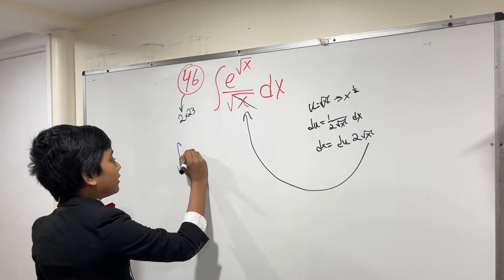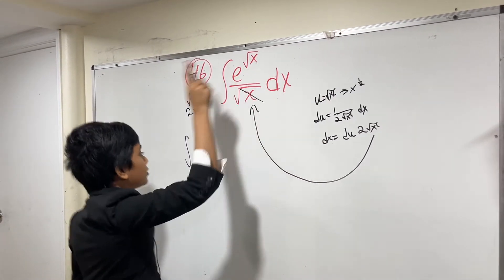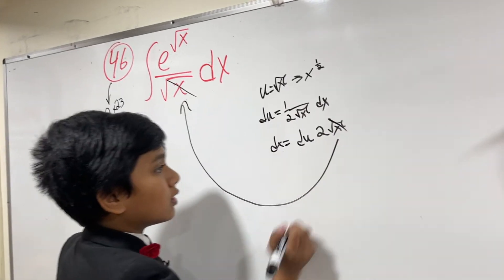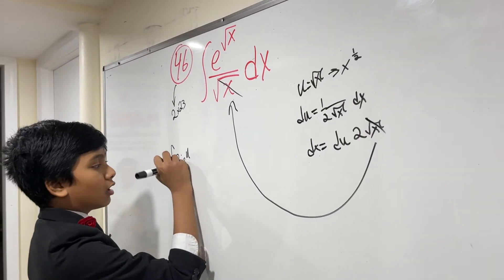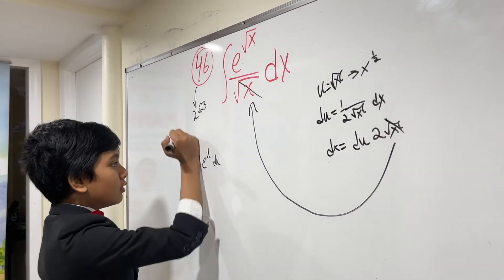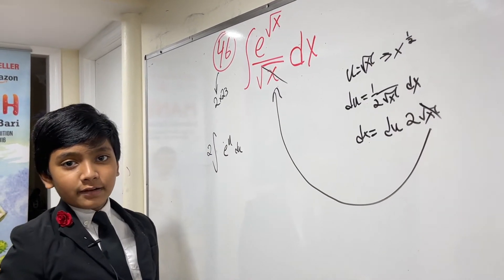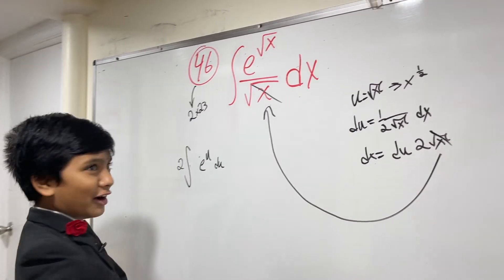So 2∫e^u du. We bring the 2 to the outside because constants like to live life on the outside. Do not laugh at that joke. When did I say that was funny? That's like laughing at 'a horse...'